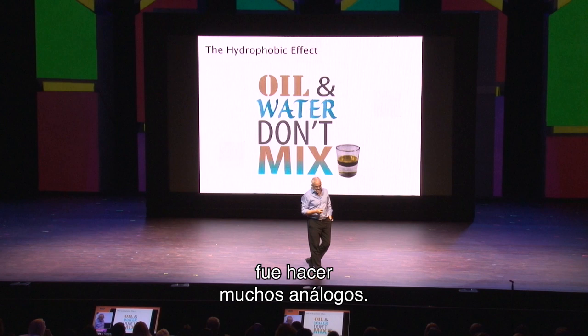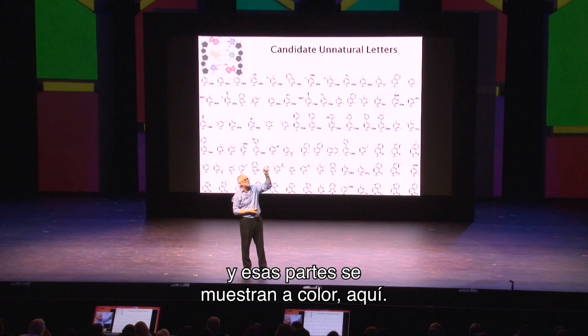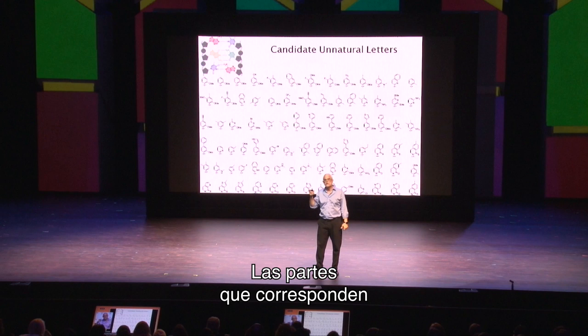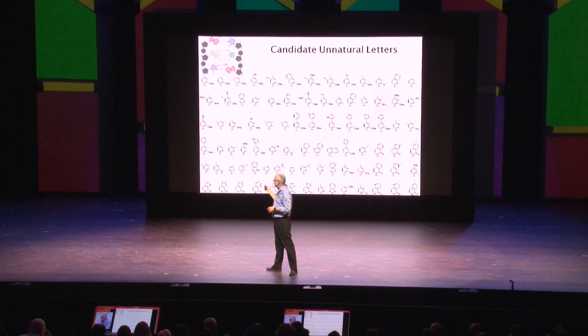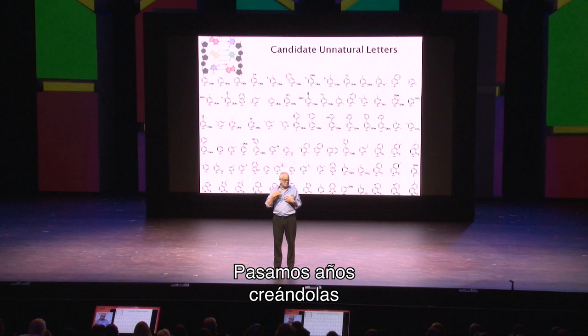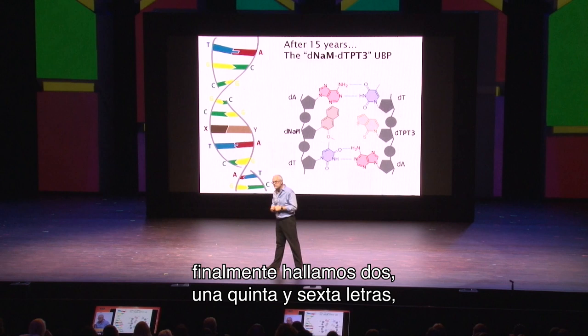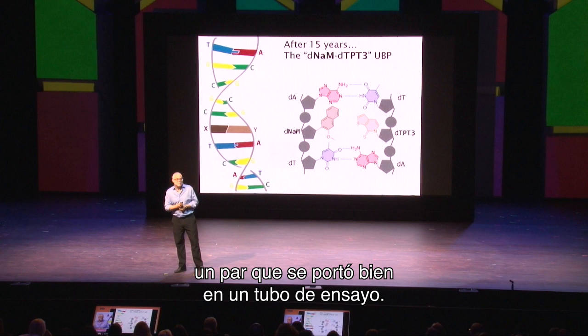The way we went about this: I'm a chemist, I love to make things. I'm showing you the part of the letter that reaches across that DNA duplex to form the rungs of the ladder. We made lots of analogs — all fatty-like, all oily — and we spent years making these and examining their ability to pair with each other. After 15 years, after synthesizing over 200 of those compounds, we finally found two — a fifth and sixth letter, a pair — that in a test tube behaved really well. That took 15 years.